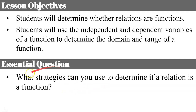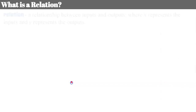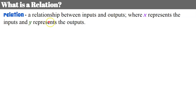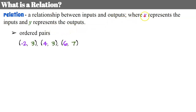So this is our focus today — I'm going to show you several different strategies. What is a relation? A relation is a relationship between inputs and outputs, where X represents the inputs and Y represents the outputs. We see this relationship between X and Y in ordered pairs, with our X coordinate and our Y coordinate. So our relation is these three ordered pairs with these three X inputs and these three Y values, or outputs.